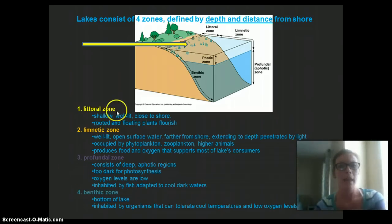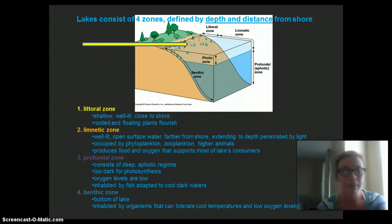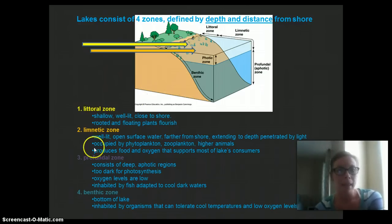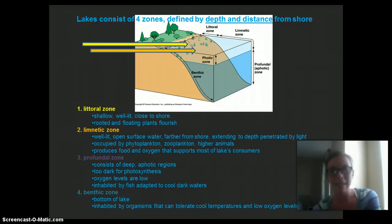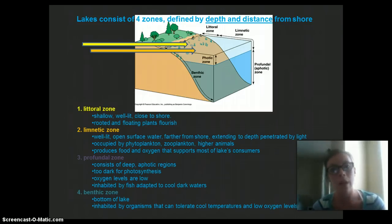The first zone is the littoral zone, which is near shore and pretty shallow and well lit. There are a lot of rooted or floating plants because it is well lit. Then we have the limnetic zone, which is open surface water — slightly deeper than the near-shore littoral region, further from shore, but light easily penetrates through. It has a lot of phytoplankton, zooplankton, and higher-level animals that feed on them. It produces the food and oxygen that supports the consumers in that lake.